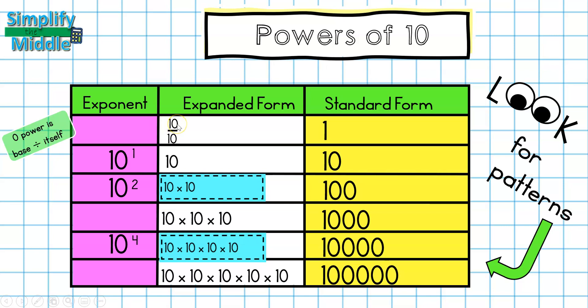So, because my base is 10, and I know that I'm going to be getting a 0 power, this must be 10 to the 0 power.